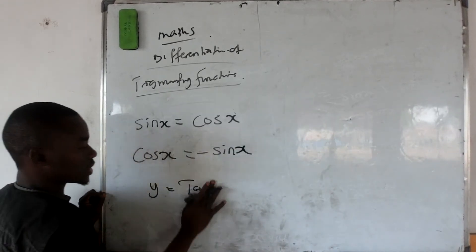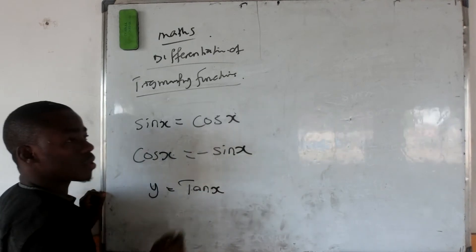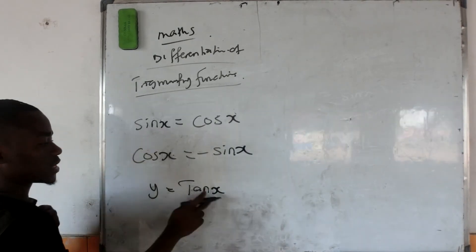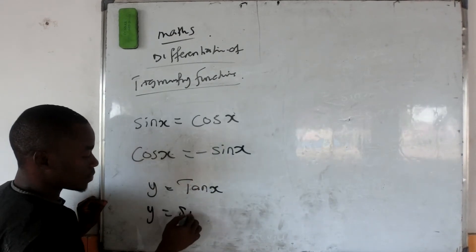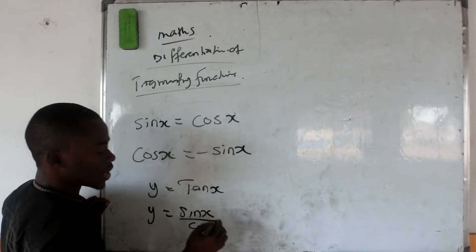So if y is equal to tan x, now I want to differentiate tan x. You can see if y is equal to tan x, this is the same thing as sin x over cos x.